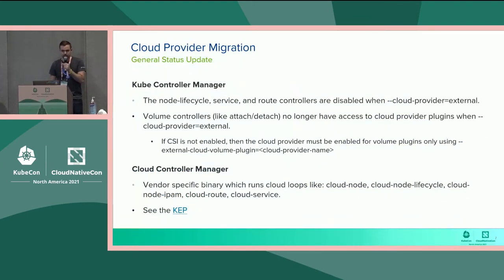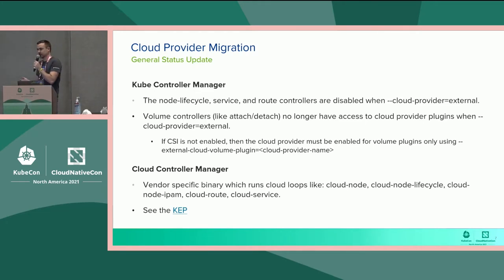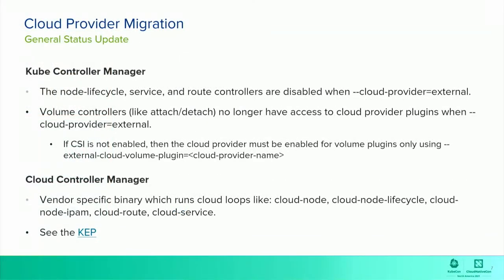As many of you probably know, the kube controller manager is basically a collection of control loops. Those control loops might be acting on Kubernetes API resources, and in some cases they're also going to be creating, updating, or deleting cloud resources as well. The whole effort to migrate the cloud-related code out of tree affects the kube controller manager, and the way we're going to do that migration is by moving those cloud loops — any of the loops that actually touch cloud resources — to a vendor-specific binary called the cloud controller manager.